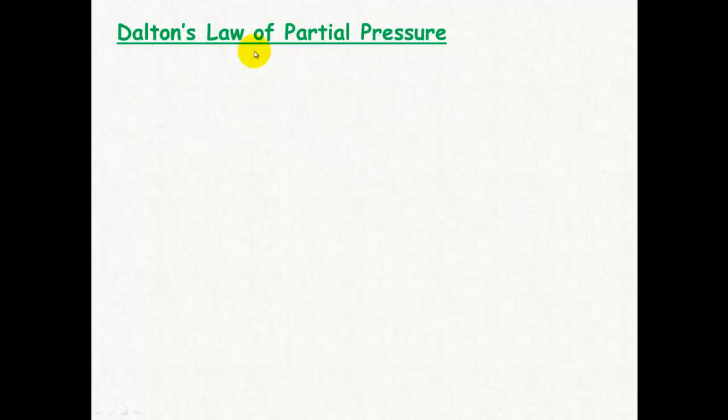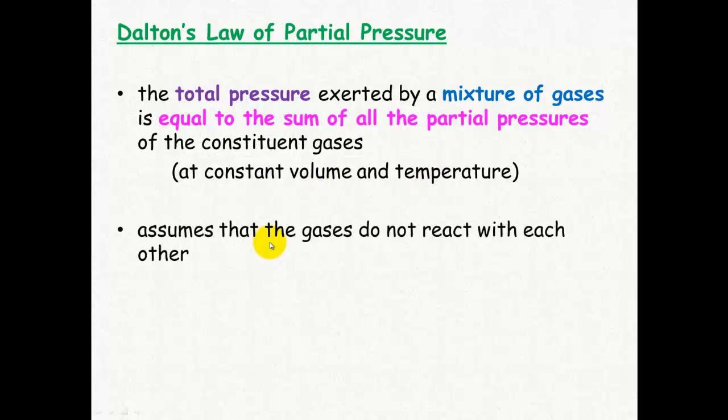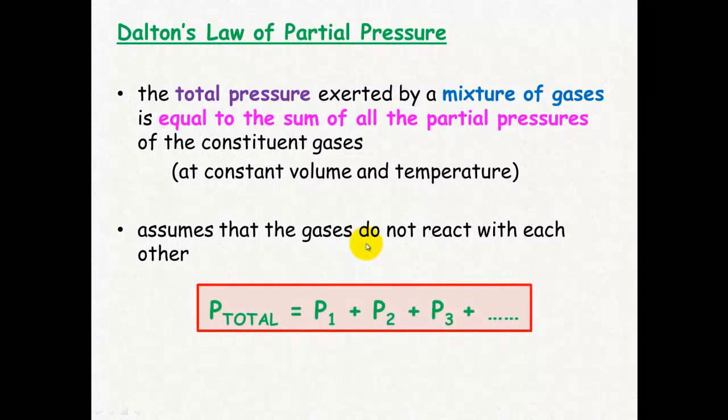So Dalton's law of partial pressures is that the total pressure is equal to the sum of all the partial pressures. And this is always at a constant volume and temperature. It assumes that the gases don't react with each other.